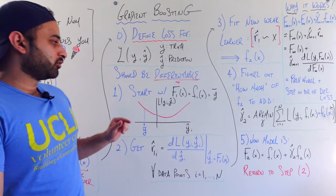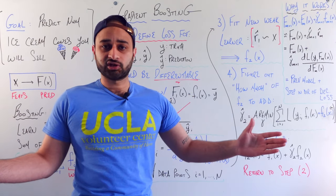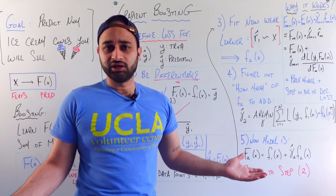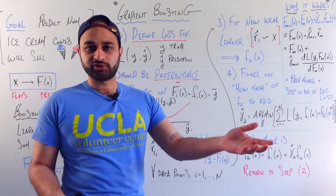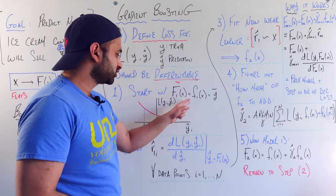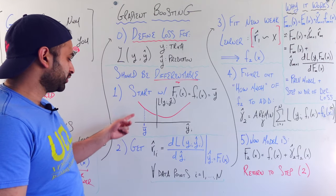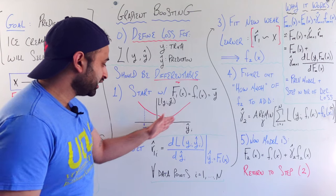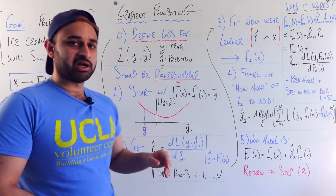Step one of the process is that we're going to start with some extremely weak learner f1 of x. For example, we can just take the mean of all of the number of ice cream cones sold in our training data — that can just be our first model. Clearly a bad idea to just predict the mean for every single day, but it's starting somewhere. Now if we plot the loss function for one observation i — the predicted value against the loss — we can see that our current prediction, which is the average of all the y's, is clearly not doing as good a job as we could. There are many other values of the predicted value that could give us a lower loss.